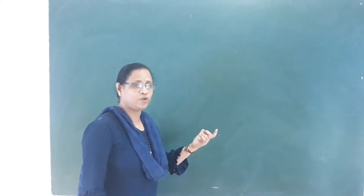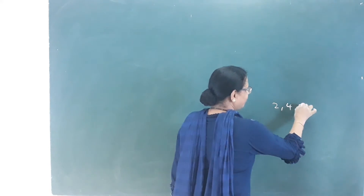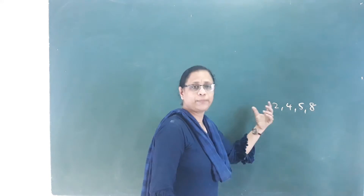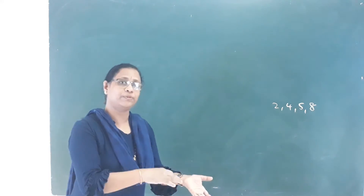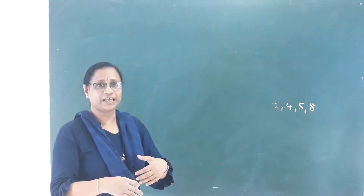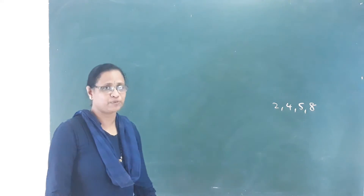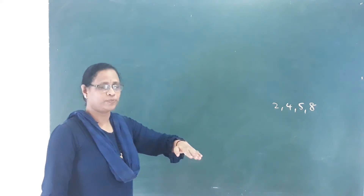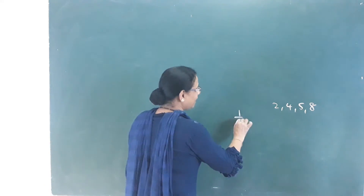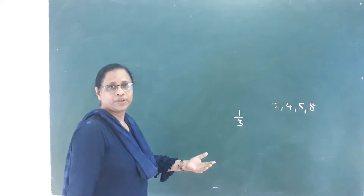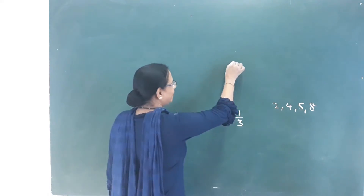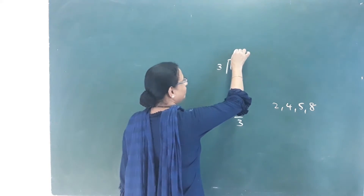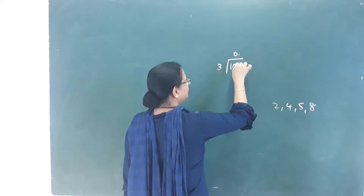Now let's try 1 by 3. That means 1 by 3. We try to make the denominator 10, but we cannot do it exactly.